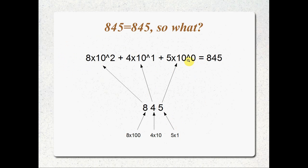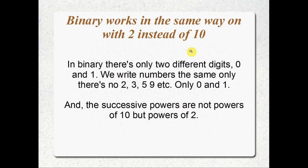This is basically what it looks like written out: five by ten to the zero, plus four by ten to the one, plus eight by ten to the two, gives you eight forty-five. And funnily enough, binary works in almost exactly the same way. The binary system is really closely related to the way that we count — they're actually two different members of exactly the same number family. They're both a positional system.